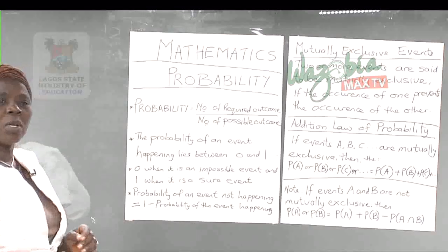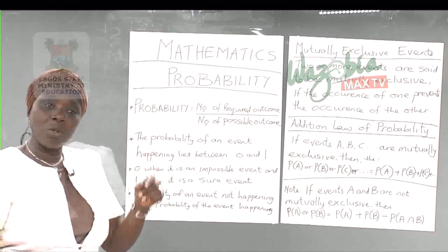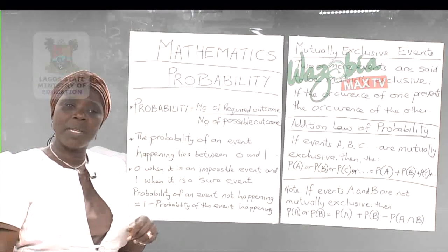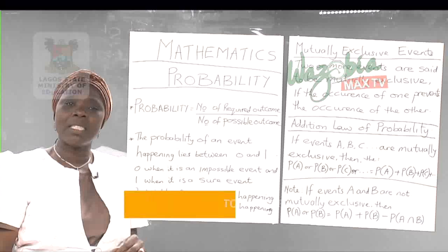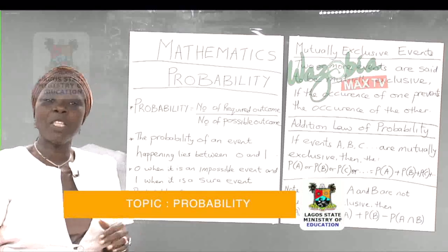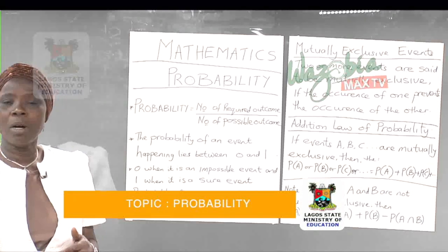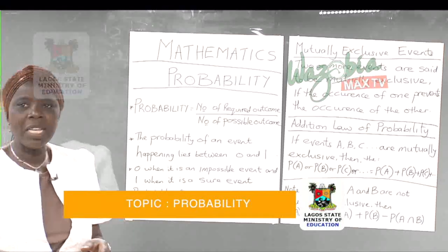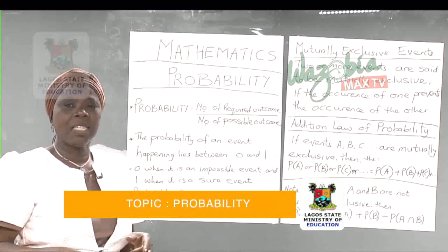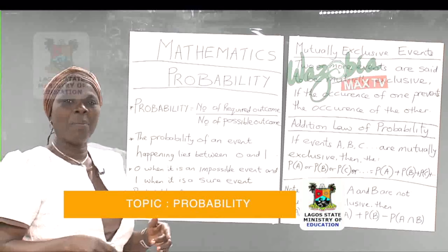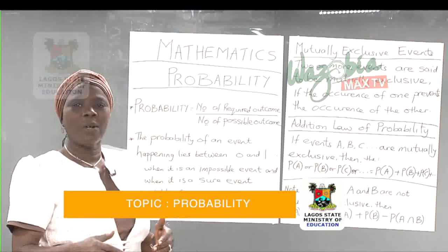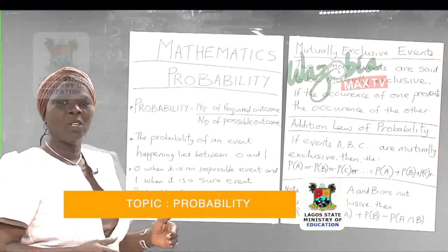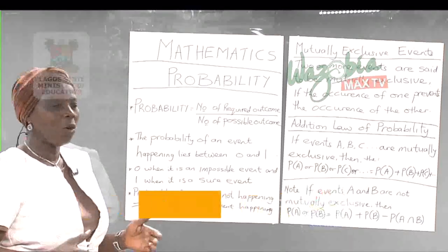We also learned that the probability of an event not occurring is one minus the probability of that event occurring.